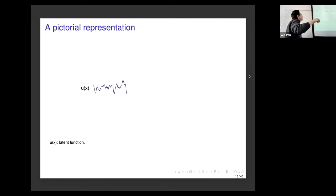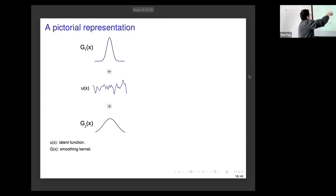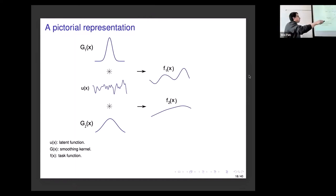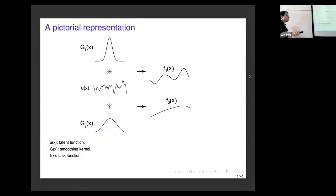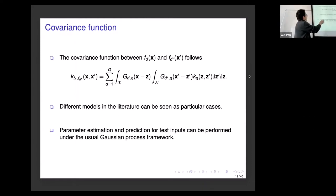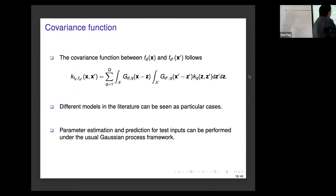This is a cartoonish way of looking at it. You have this latent process, you do convolutions with smoothing kernels — one per output — and you get the different representations for your outputs. You end up building covariances that account for dependencies between F_D and F_D prime. That's how you express those cross-output covariances.